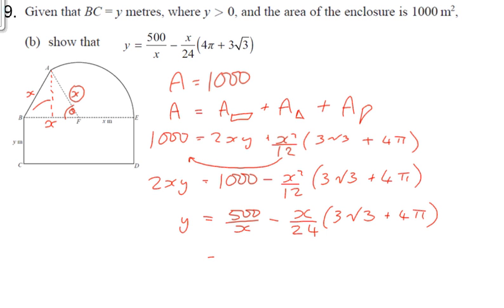And I'm just going to go that last step and write it in exactly the same form that they're asking us to show. So, I'm going to switch the last two terms. So, 4 pi plus 3 root 3, as required.